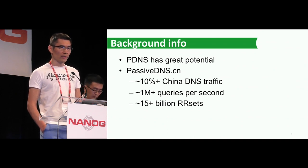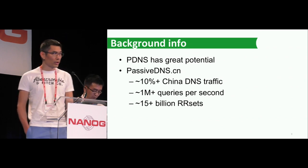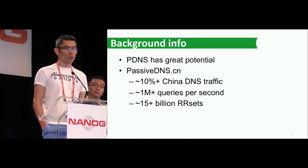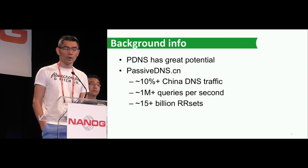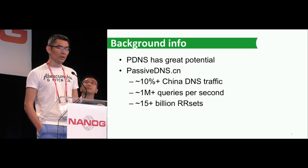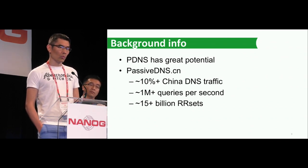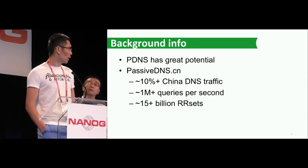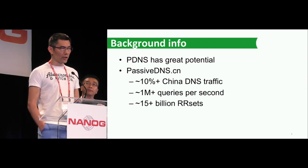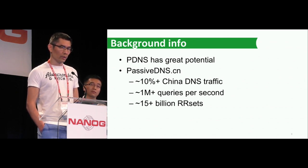Passive DNS has very great potential in the security community and more and more companies are starting to use it. That's why we run our own passive DNS system — it's pdns.cn. If you're a security researcher, you can go there and apply for an account; it's free. The platform currently covers more than 10% of all Chinese DNS traffic. On average, every single second we see more than 1 million DNS queries, and altogether we have 15 billion-plus RR sets. With that, I'm going to give the mic to Saifeng.